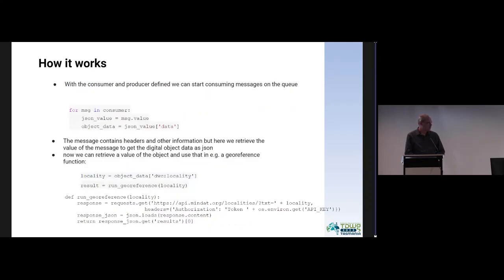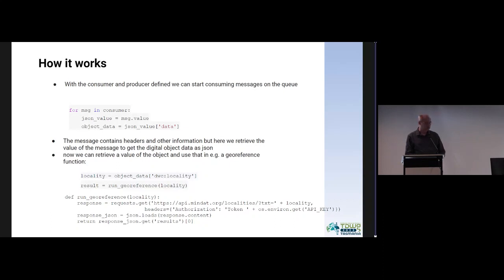Once the consumer and producer are defined, you can start receiving the distal specimen object. Currently, we only support annotating individual distal specimens. You load the objects by location and then retrieve the values you need. For instance, in this georeferencing example, you retrieve the locality fields to look up the longitude and latitude values.